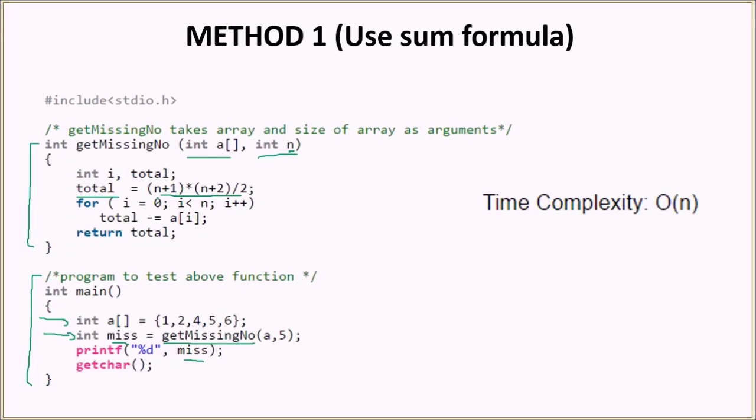That is why we are using n plus 1 into n plus 2 by 2. Note that although we are passing the value 5 here because we are having 5 elements, effectively it will calculate the sum of first 6 natural numbers. After we are done with this step, as per the algorithm, we subtract all the elements of the array from the sum value and then whatever we are left with will be our missing number. That comes here and we basically print it. The time complexity of this solution will be order of n because we are iterating over all the elements only once.